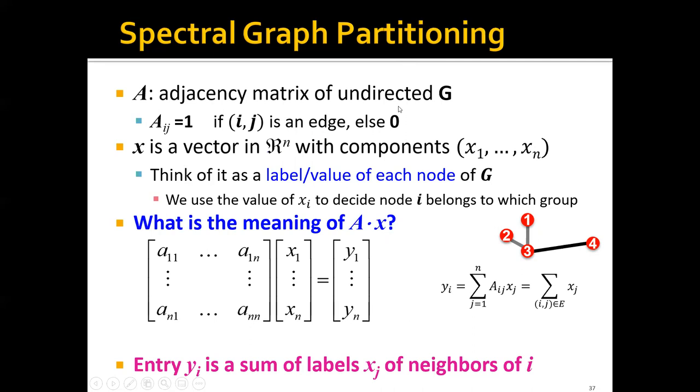We also define x as a vector in n-dimensional space with components x1 to xn. And of course, n here is the number of nodes in the graph. So we can think of x as a label value of each node of G,